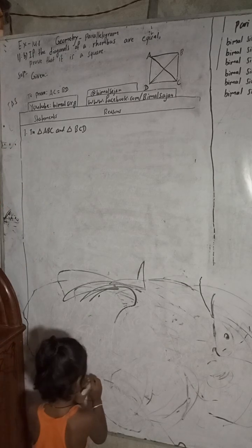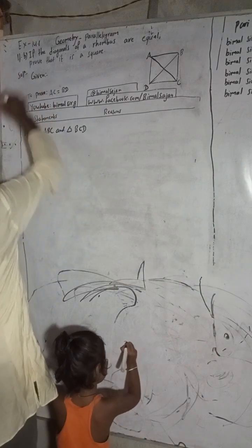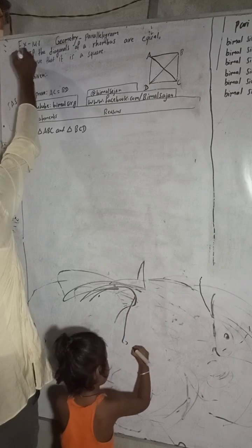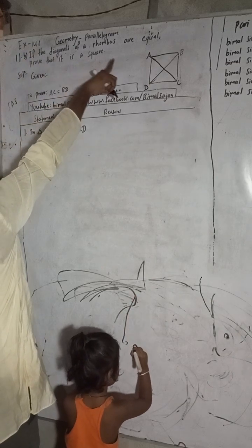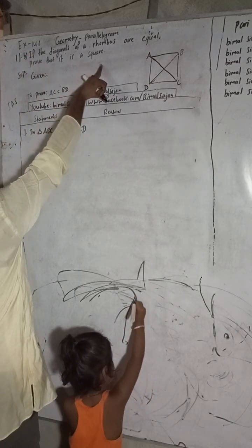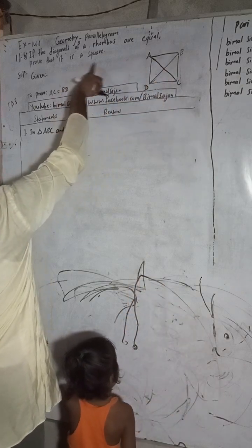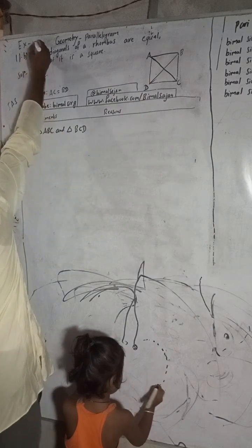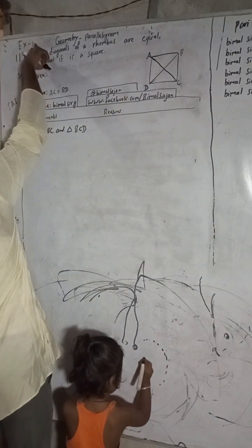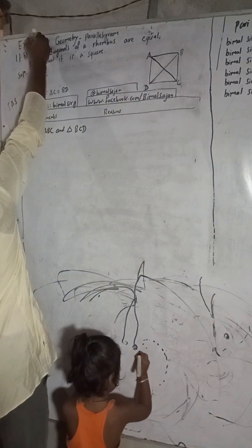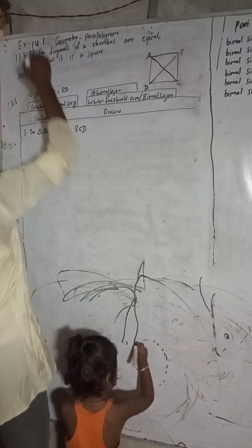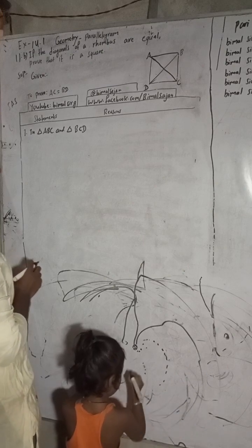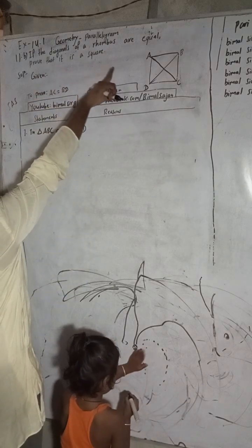Let's now start the solution. This is question 11B — in the camera it is not clearly seen, but this is 11B. If the diagonals of a rhombus are equal, prove that it is a square. This is exercise 14.1. Now to prove this: given that the diagonals of a rhombus are equal.